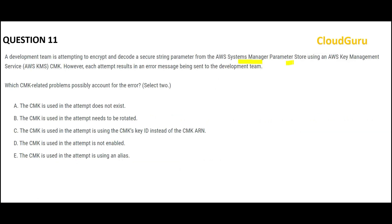In this scenario, developers are trying to read a string parameter from the Parameter Store, decode it, and they are using a customer managed CMK to encrypt the secure string so it is not compromised. But they are getting an error. What can be the two reasons? The first reason: maybe the CMK does not exist at all — the key you are using simply isn't there.